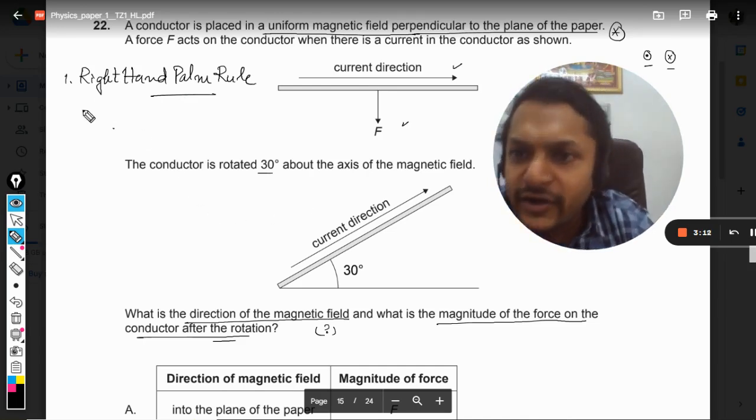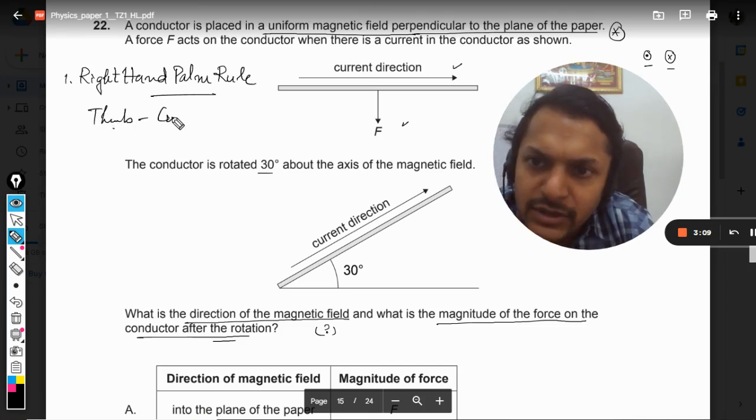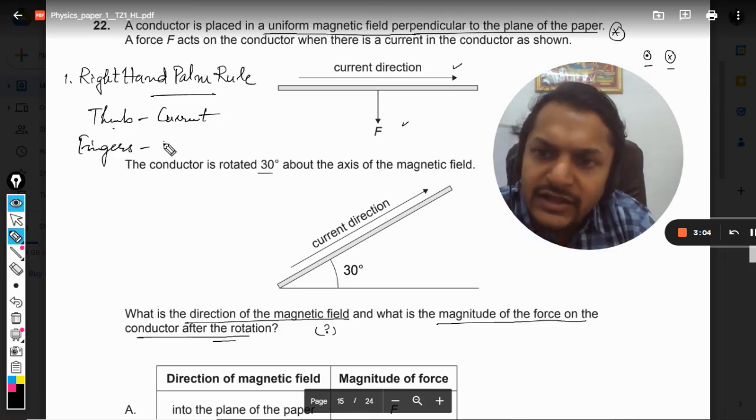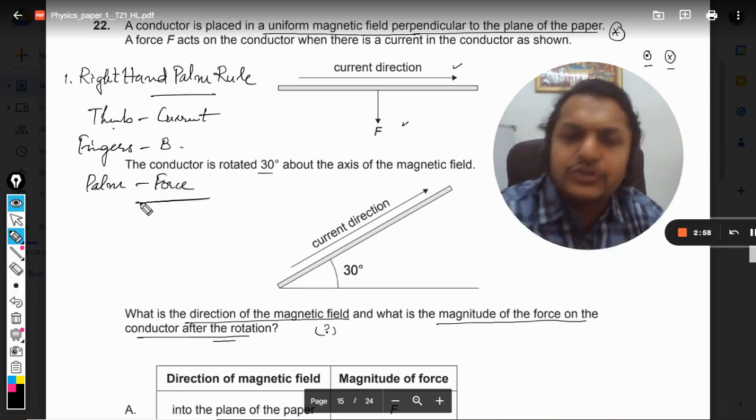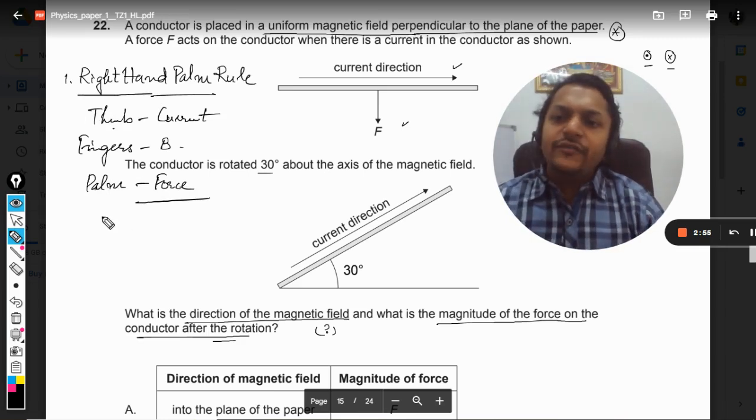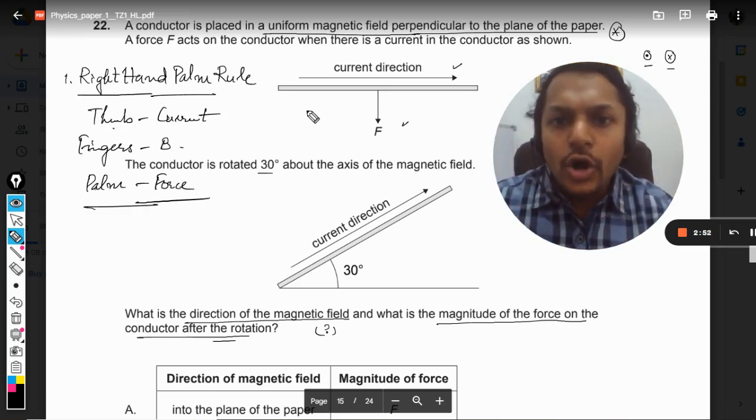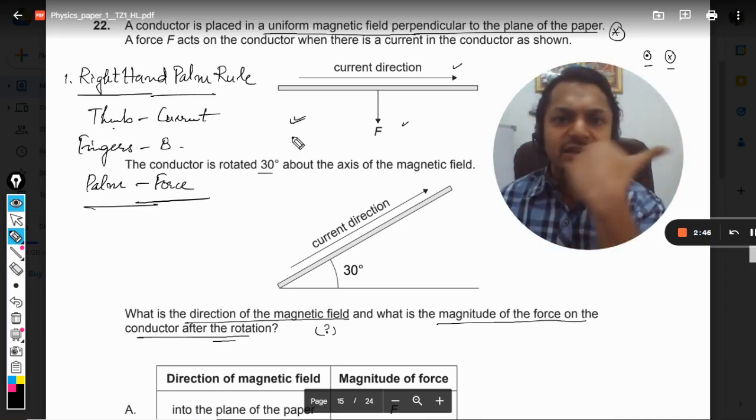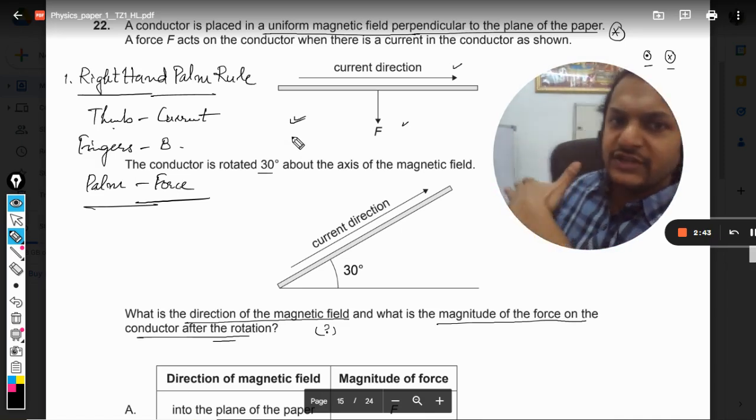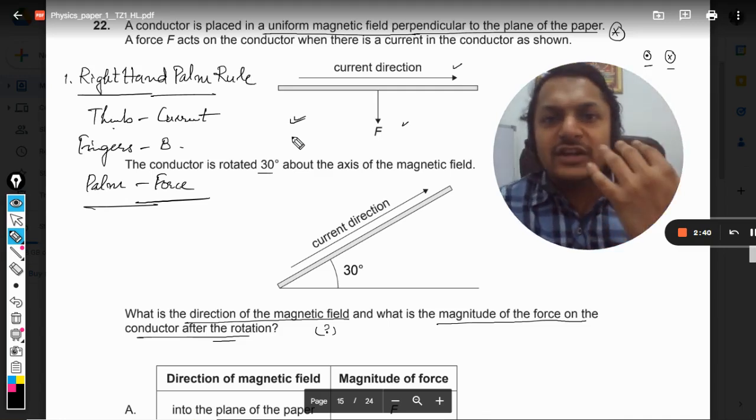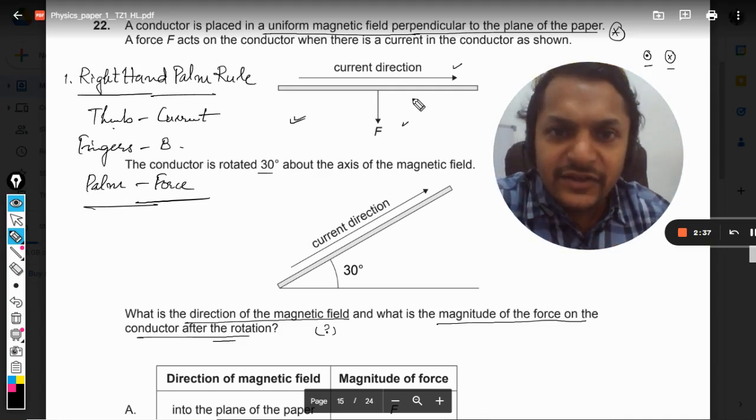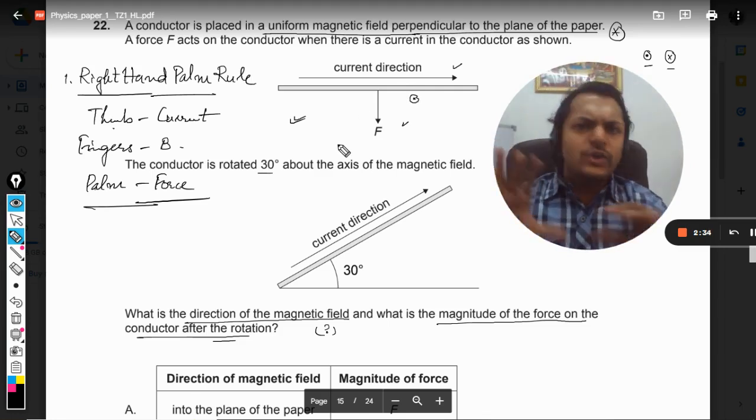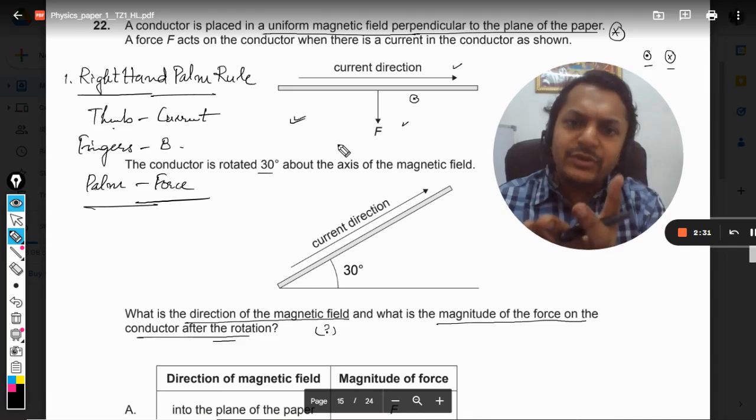The thumb is pointing towards the current and my fingers point towards the magnetic field, so the palm will be pointing towards the force. So I write it here: thumb in the direction of current and the fingers in the direction of magnetic field, so the palm will be in the direction of force. And we are using the right hand. So if I am using this and I apply this law in the first case, it comes out to be like this: the current is in the right direction and so the force has to be downward. It means that my fingers will be pointing towards me, which means that the magnetic field is coming out of the board. You can use any other method if you want, but I personally prefer right hand palm rule. That is why I have done it.